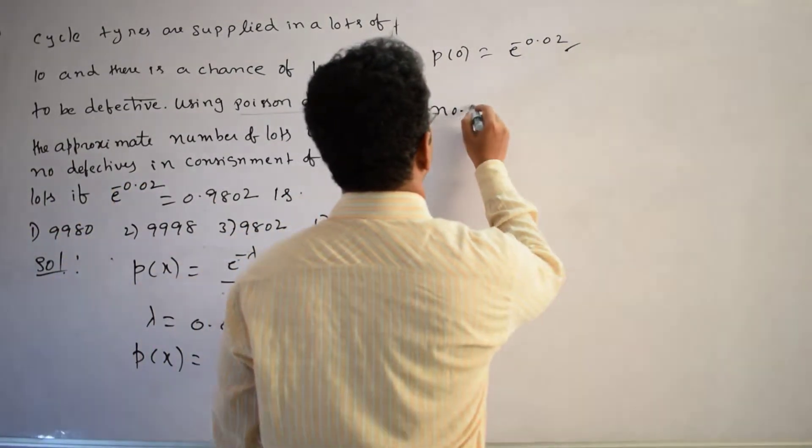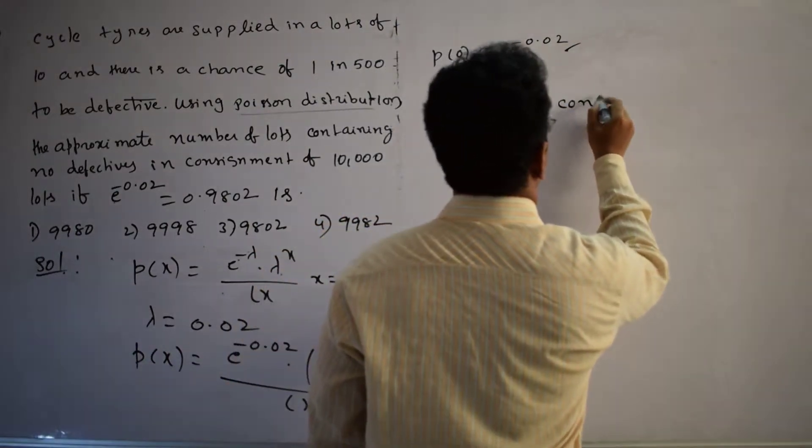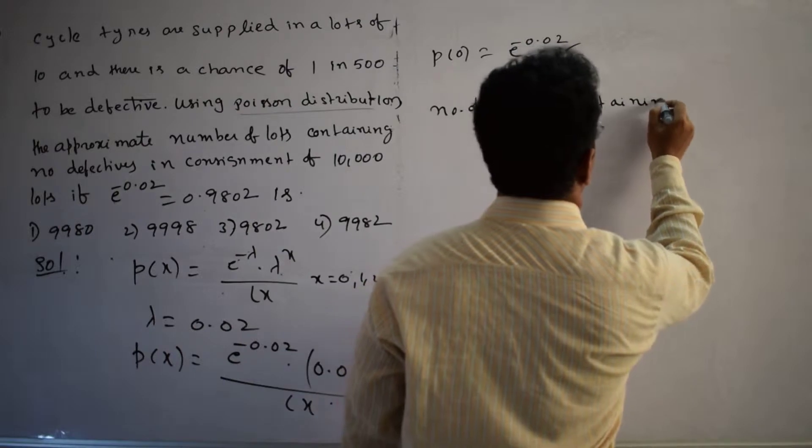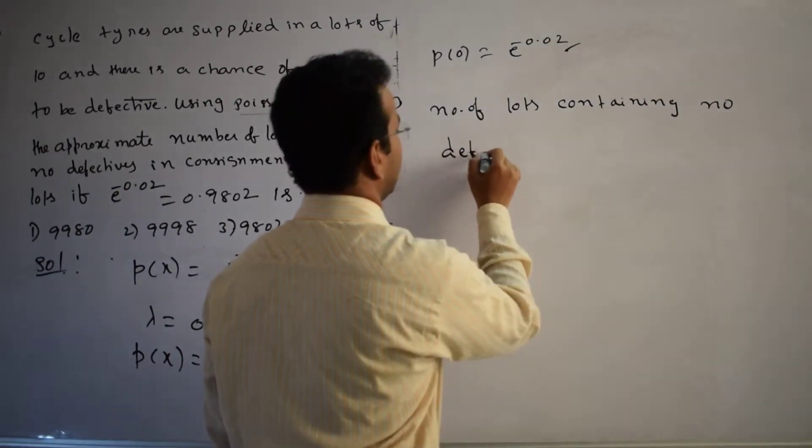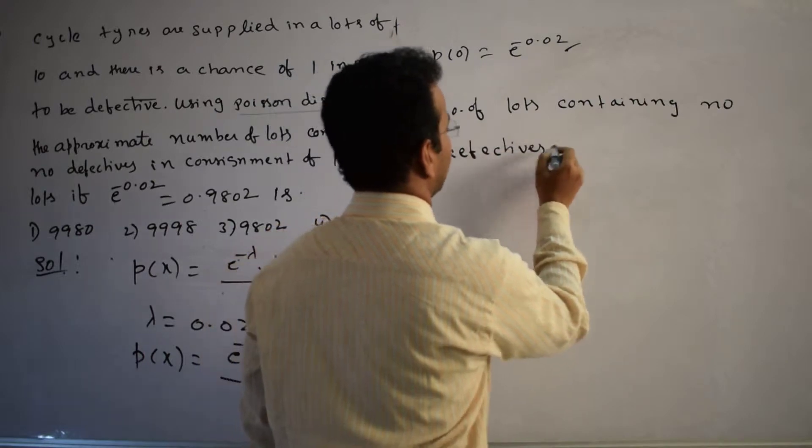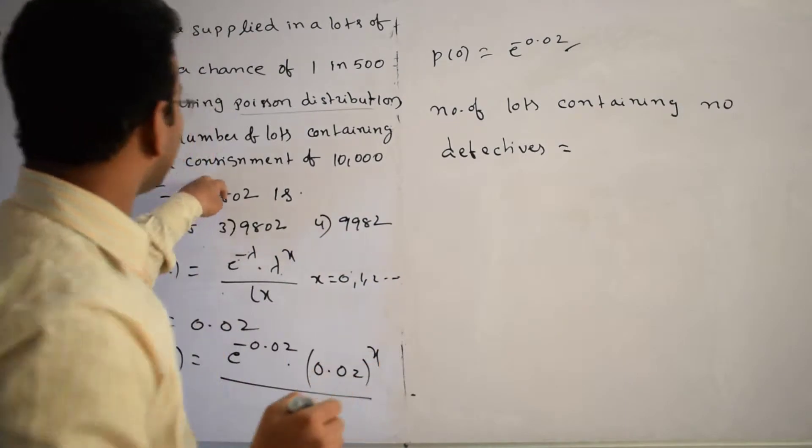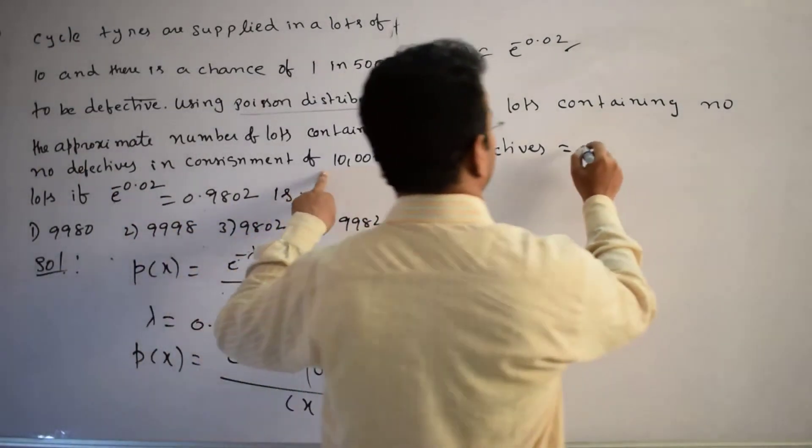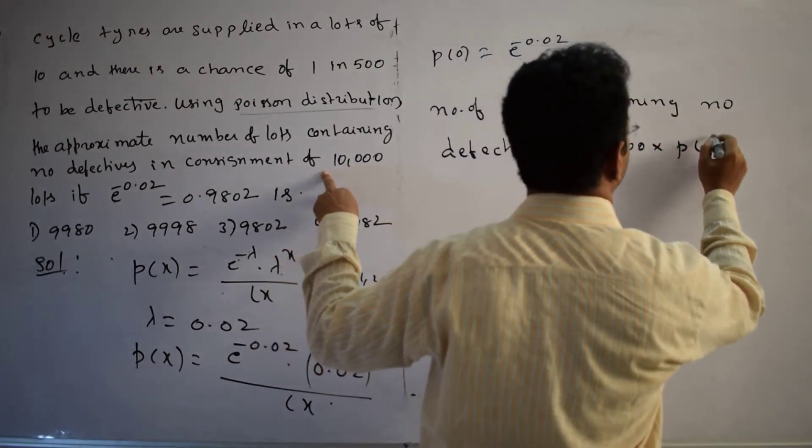Number of lots containing no defectives equals to the number of actual lots. What are the actual lots? 10,000. Out of 10,000, take 10,000 into P(0), that's it.